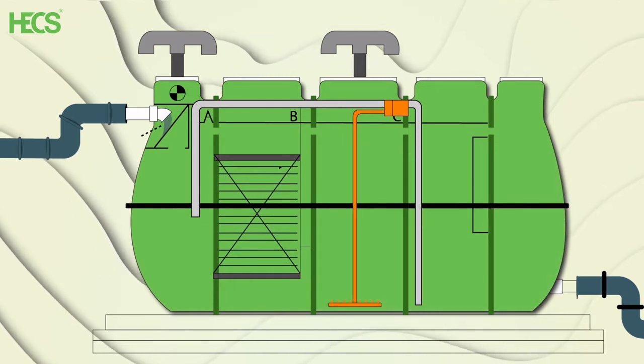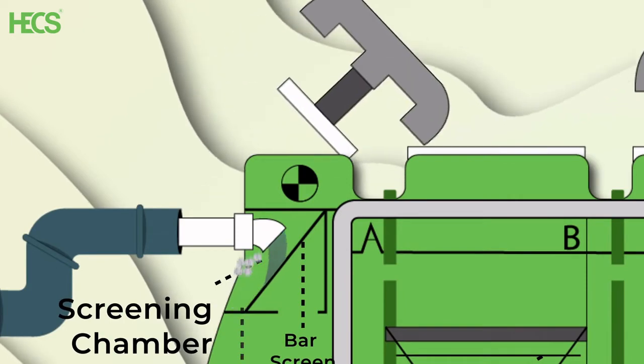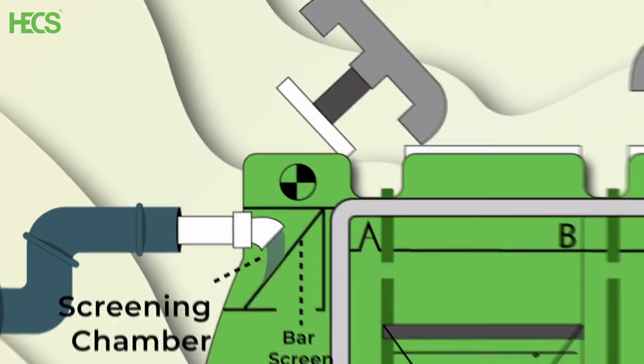The sewage first flows into the screening chamber. The screening chamber consists of a bar screen, which is used to separate the floating solids and particles present in the sewage. This is accumulated in the screening chamber and can be easily cleared on a weekly basis by opening the first chamber.